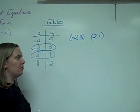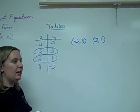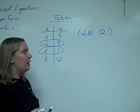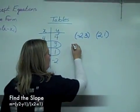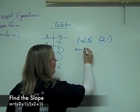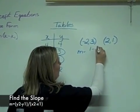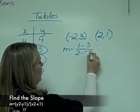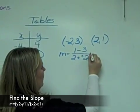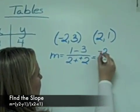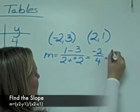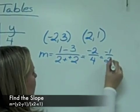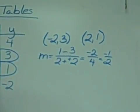And from these two ordered pairs, I'm going to find the slope and then write my equation in point-slope form. So first, to find the slope, I would do one minus three divided by two minus negative two. This gives me negative two over four, which reduces to negative one-half. So my slope is negative one-half.